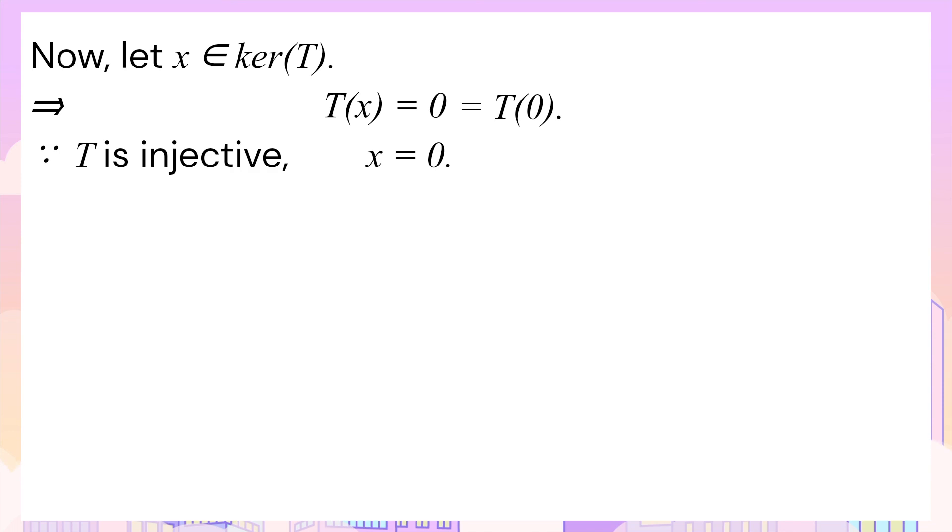But since T is injective, this means no two different elements in the domain have the same image in the codomain. So the only vector in X that maps to zero in Y under the one-to-one linear transformation T is zero. Thus x equals zero.